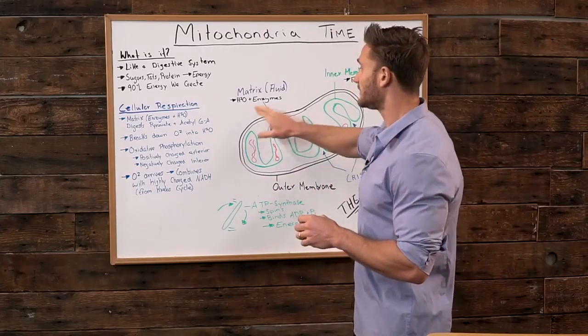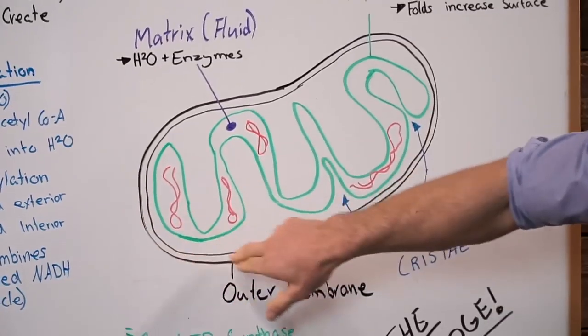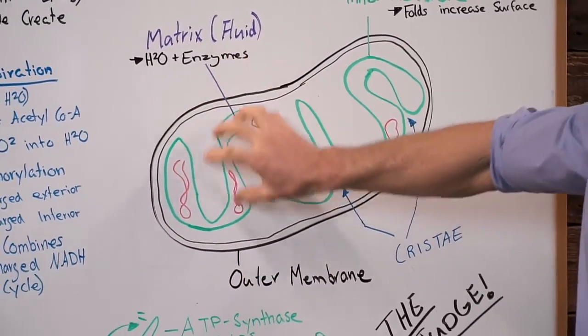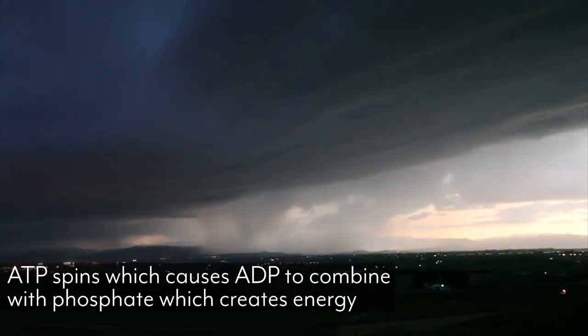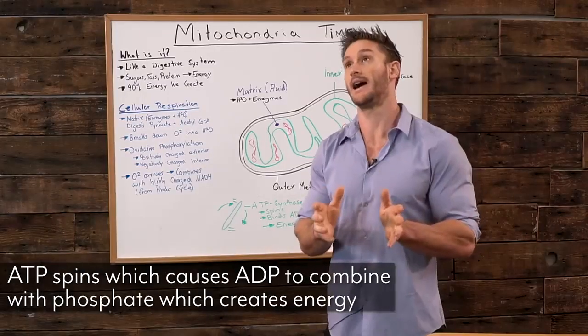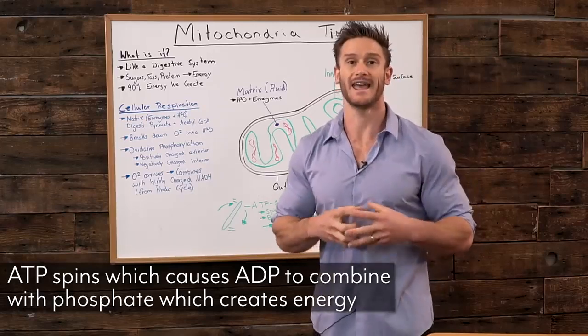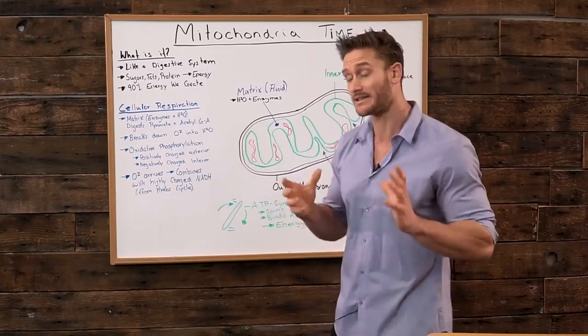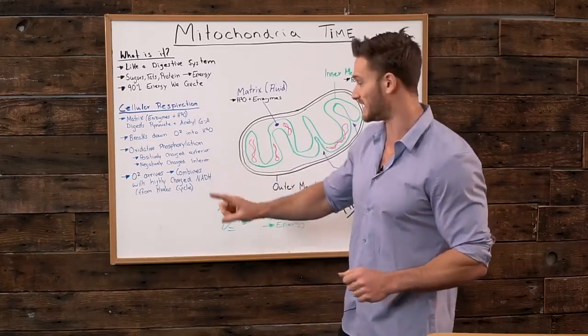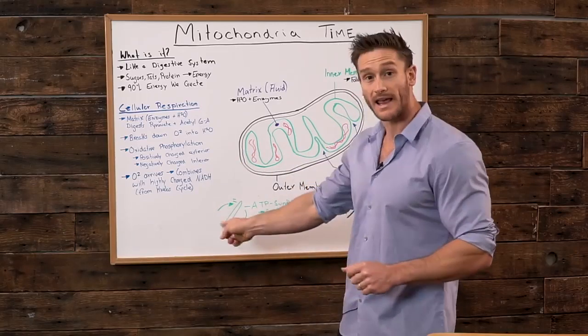We have positively charged exteriors of the mitochondria and negatively charged interiors. That is how we create energy. ATP synthase spins, which causes ADP to combine with phosphate, which creates ATP, which is energy. Essentially, electricity spins this turbine right here and ends up creating energy.